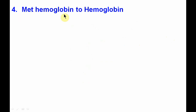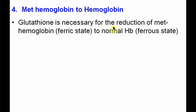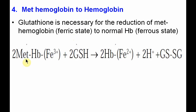The fourth important function is the conversion of methemoglobin to normal hemoglobin. Glutathione is necessary for the reduction of methemoglobin to normal hemoglobin. This is important because methemoglobin, where the iron is in the ferric state, is unable to carry oxygen, i.e., oxygen transport is impaired. So its conversion to normal hemoglobin is very important. In this reaction, methemoglobin where the iron is in the ferric state is converted back to the ferrous state with the help of reduced glutathione.